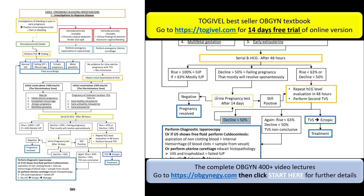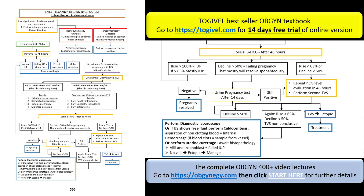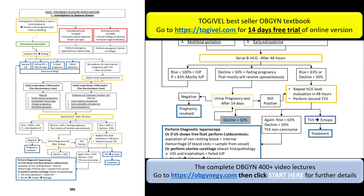After 48 hours, if it declines more than 50%, do the urine pregnancy test after 14 days to assure the pregnancy has resolved. If still positive, repeat again. As long as it is declining more than 50%, there is a good chance it will resolve, so continue following up. If TVS shows ectopic pregnancy, treat as ectopic.